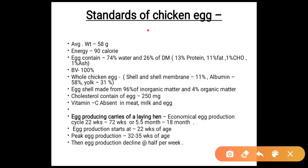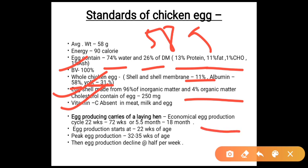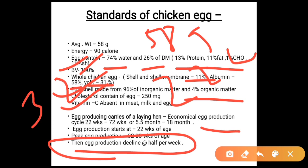Standards of a chicken egg: weight is about 58 grams, energy is about 90 calories. An egg contains about 74% water and 26% dry matter; of the dry matter, 30% is protein, 11% fat, 1% carbohydrate, and 1% ash. Biological value is 100%. A whole chicken egg is composed of shell and shell membrane (11%), albumin (58%), and yolk (31%). The egg shell is made up of about 96% inorganic matter and 4% organic matter. Cholesterol in egg is about 250 mg. Vitamin C is absent in milk, meat, and egg. The economic egg production cycle is from 22 weeks to 72 weeks (5.5 to 18 months), with peak production at 32–35 weeks.